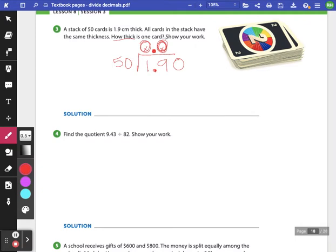50 can go into 190 three times, which is 150. So I would have 40 left. I cannot just say remainder 40. I'm going to add a 0 and keep working. And I know that 50 goes into 400 eight times exactly. So I know that the thickness of one card is 0.038 centimeters.